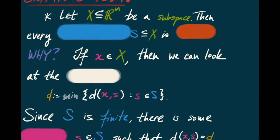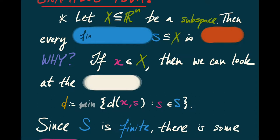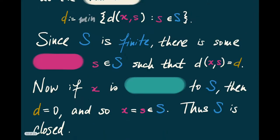Let's continue with examples. Suppose I have a subspace of Euclidean space. Then every finite subset S of X is closed. Why? If I have a point of X, let d be the shortest distance from x to an element of S. Since S is finite, there really is a point s in S such that the distance equals d. So either x is close to S or it isn't. If x is close to S, then d is actually 0, meaning the distance from x to some point of S is 0, which means x is actually equal to s and therefore inside S. In other words, every point that is close to S is actually in S — that means S is closed.